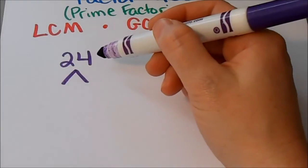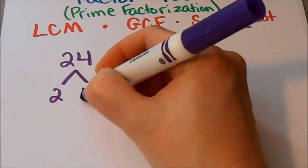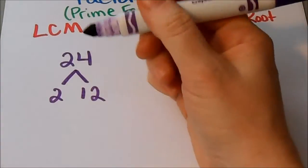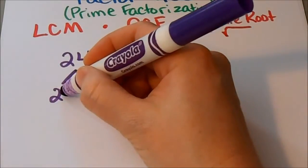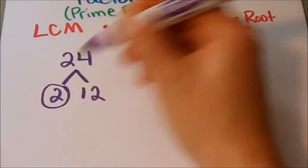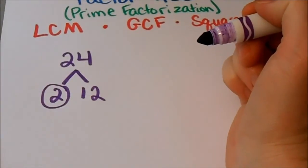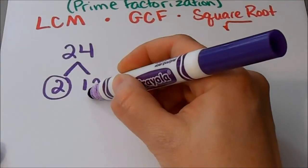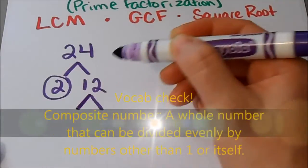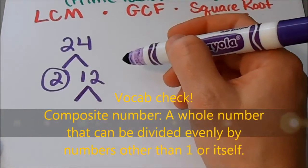What two numbers could I multiply to make 24? I could do 2 and 12 — that would work. Right off the bat, I already have a prime number in my factor tree, so I'm going to go ahead and circle that prime number.